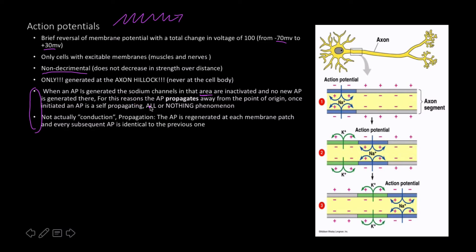For this reason, the action potential propagates away from the point of origin, away from the axon hillock. It could go the other way, but it can't because of the nature of the cell body, and it stays on the axon. An action potential is a self-propagating, all-or-nothing phenomenon — it is not graded; it is either on or off.